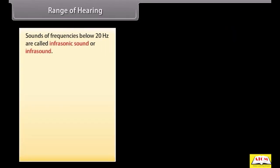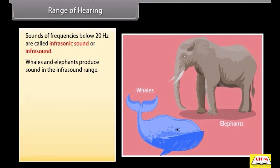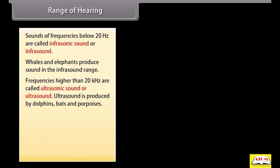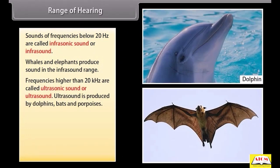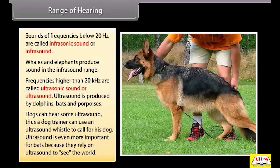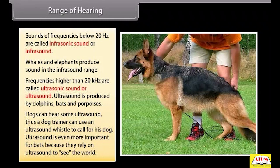Sounds of frequencies below 20 hertz are called infrasonic sound or infrasound. Some animals like whales and elephants produce sounds in the infrasound range. Frequencies higher than 20 kilohertz are called ultrasonic sound or ultrasound. Dogs can hear some ultrasound. Thus, a dog trainer can use an ultrasound whistle to call his dog.